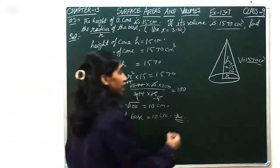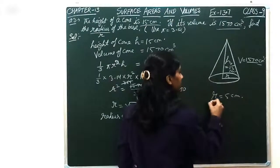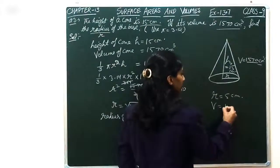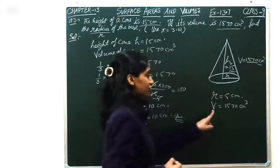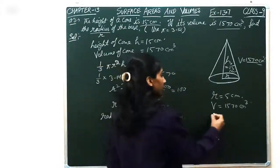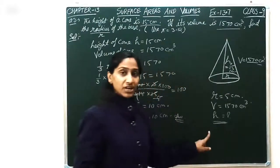Similarly, if radius ki value is given 5 cm, and volume is same value 1570 cm³, then you can find h ki value. Tell me your answer. If you have any doubt in this question, you can ask through comments.